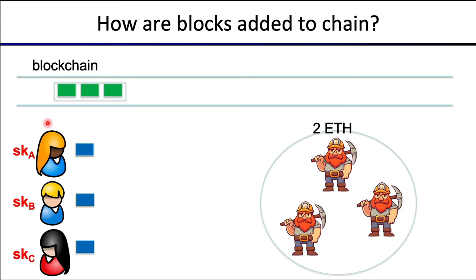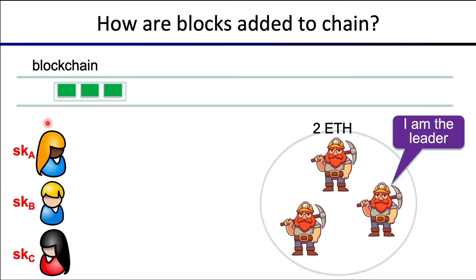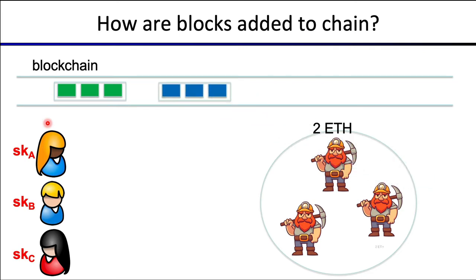The next thing that happens is we move to the next block. Our friends Alice, Bob, and Carol again have a new set of transactions they want to post to the chain — basically indicating who's paying who, or some more complicated data. Again, they sign these transactions, send them to the network, and a new leader gets elected. The second miner gets elected, gets to form the block, posts it on the blockchain, and gets his two ETH reward. This process continues again and again, and that's how the blockchain evolves.